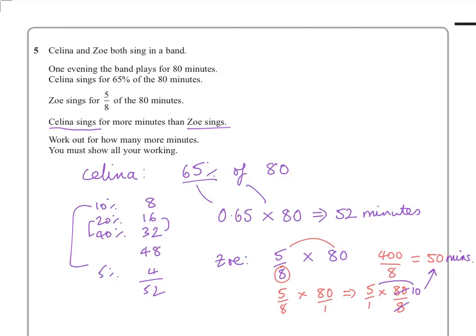So you've got to work out the difference in singing time, and therefore we'd have 52 minus the 50, which is 2 minutes difference. OK, so that's question 5.